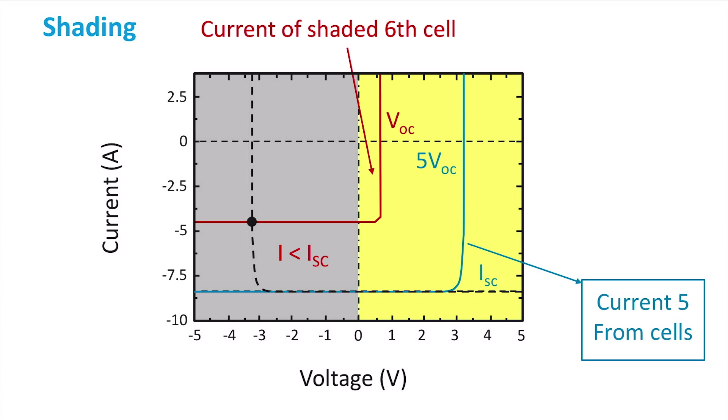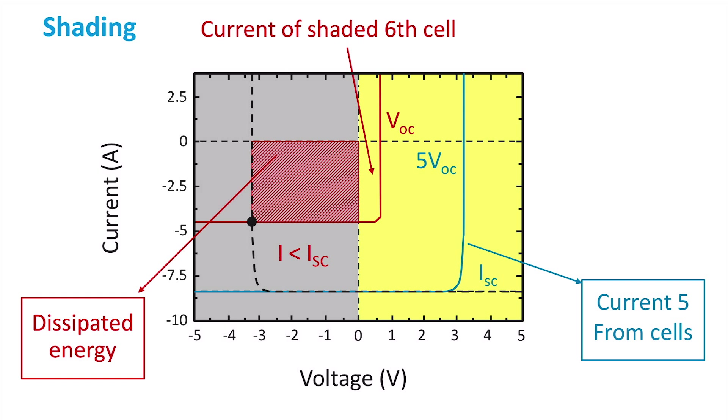The dashed black line represents the reverse bias load that is placed on the shaded cell. This is the IV curve of the five non-shaded cells mirrored to the vertical axis at 0V. A reverse bias over the shaded cell in fact means that it will start dissipating power and heat up.